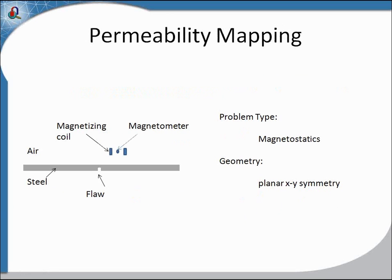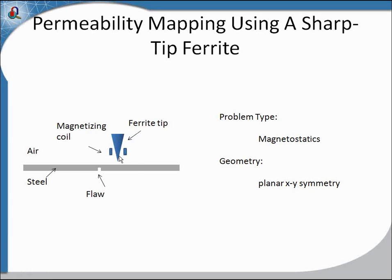In addition to eddy current simulations, we can also look at permeability mapping, where instead of AC magnetics we're using magnetostatic simulations. This is a simulation in planar XY symmetry, where we have a steel bar with a flaw and a magnetizing coil with a central magnetometer. As this is scanned over the flaw we can measure the flaw response at the magnetometer, and we can use the label mover feature to scan.